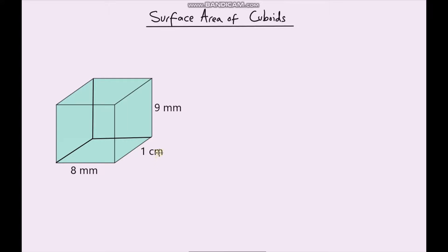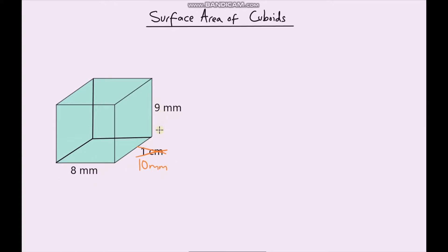So before I calculate the surface area, hopefully you spotted something — hopefully you spotted that we have different units here. So what we're going to have to do is first of all convert this dimension from centimetres into millimetres. One centimetre is the same as 10 millimetres. Now we've got all of the same units, we can calculate the surface areas.